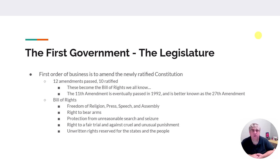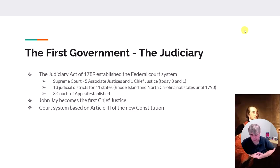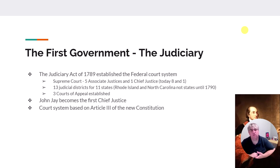The 27th Amendment gives Congress the ability to give itself pay raises. The judiciary is created with the Judiciary Act of 1789, which puts Article 3 of the Constitution into play and creates the Supreme Court. Today it has eight justices and one chief justice for a total of nine, but originally there were five associate justices and one chief justice for a total of six. There are three courts of appeal under that, and 13 judicial districts across 11 states — Rhode Island and North Carolina were not yet states. The first chief justice is John Jay, one of the writers of the Federalist Papers.